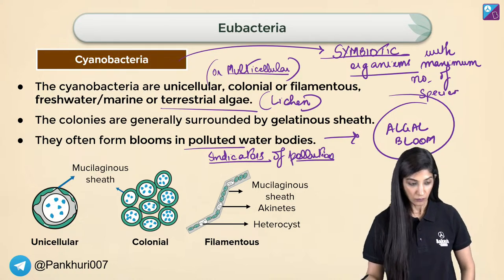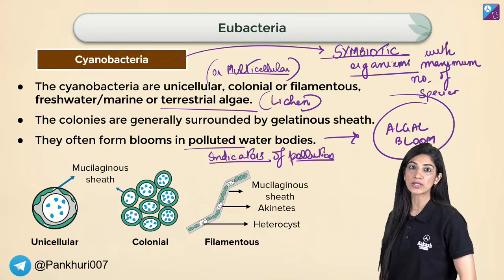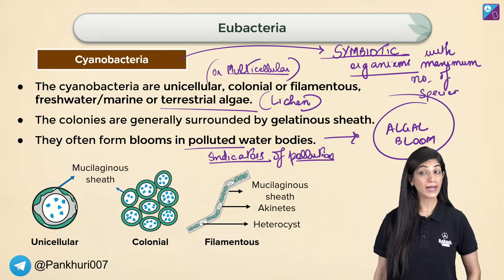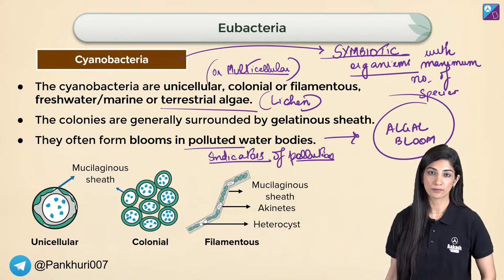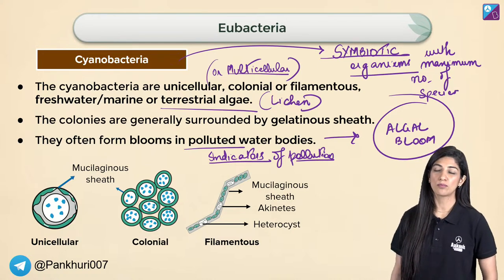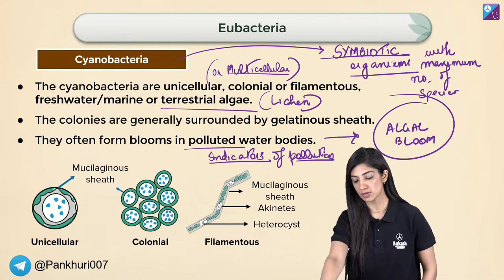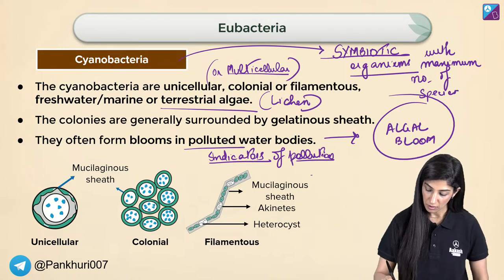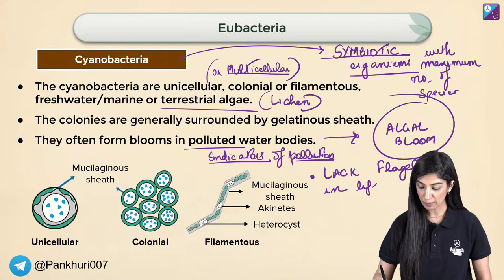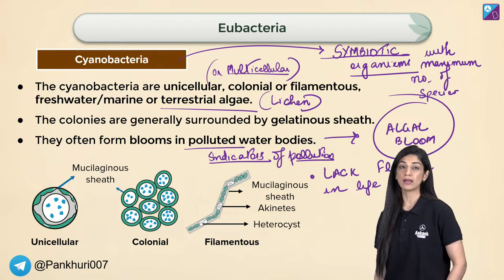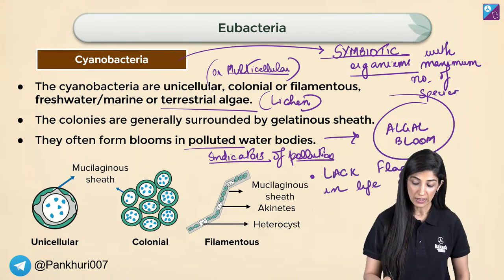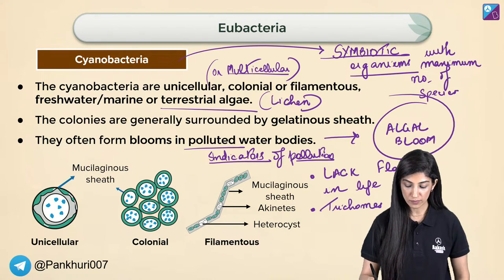Bacteria have flagella as their major and only locomotory organ. They do not have cilia — that is a common mistake. Pili and fimbriae are not locomotory organs; they are attachment organs or conjugatory structures. Cyanobacteria lack flagella entirely.